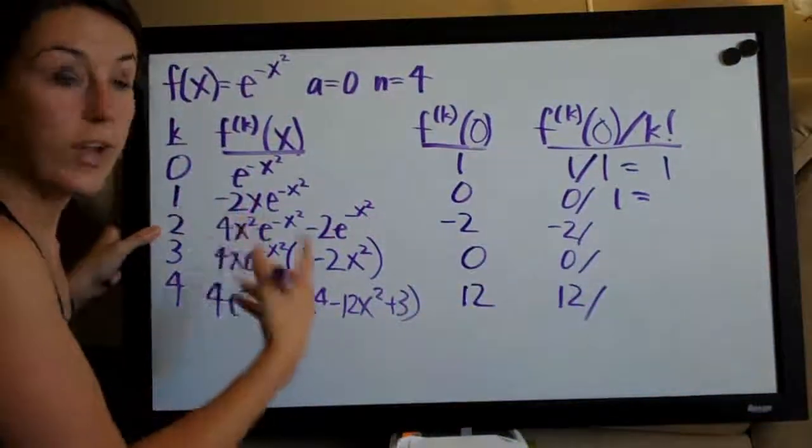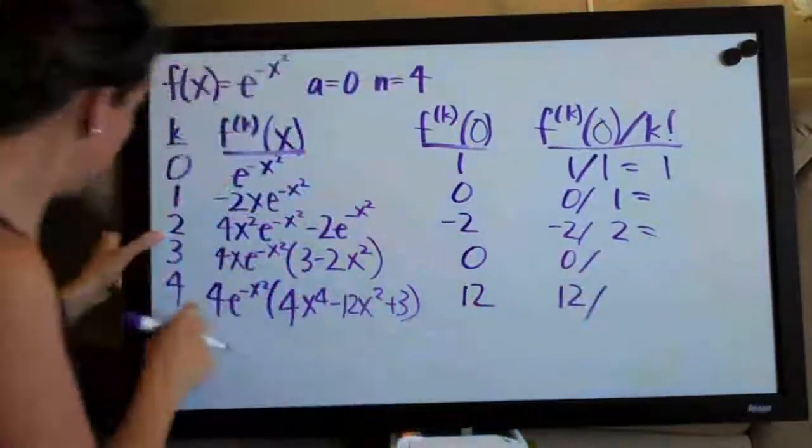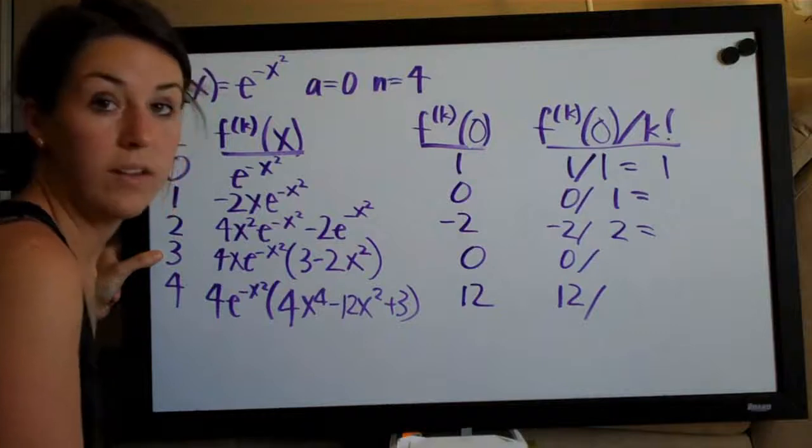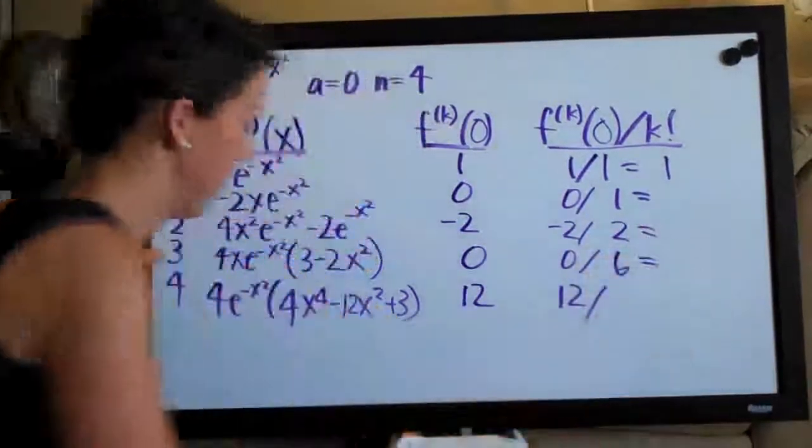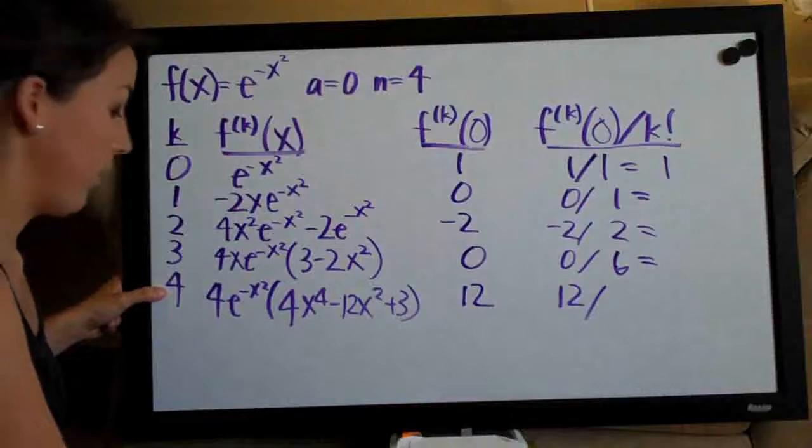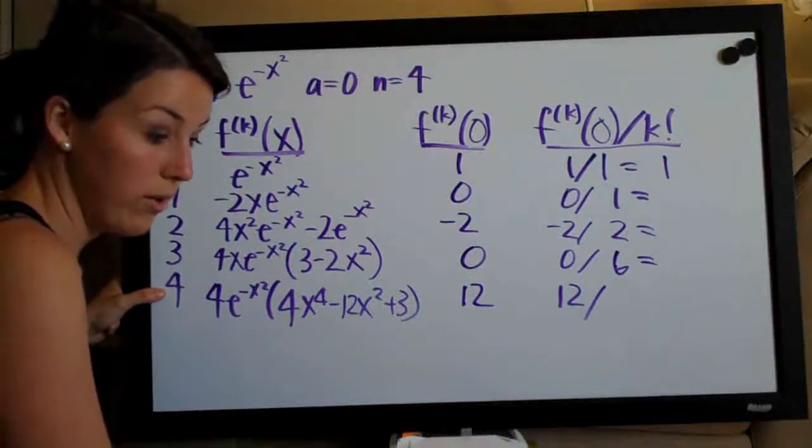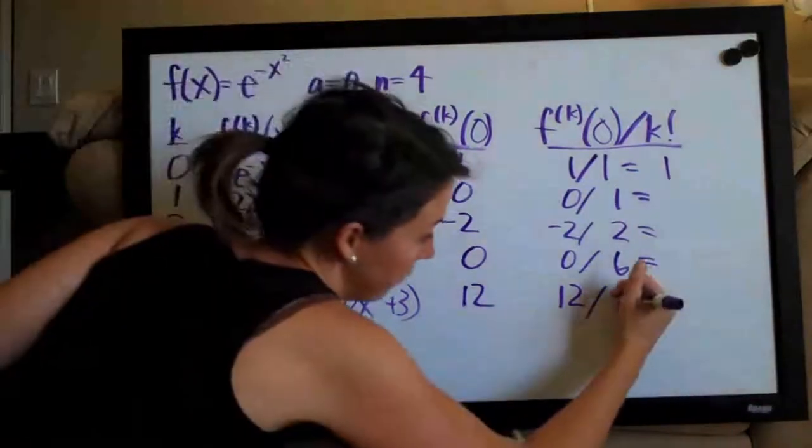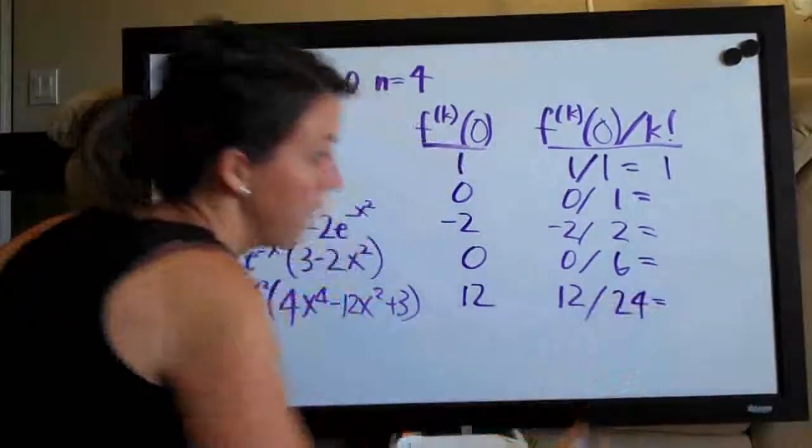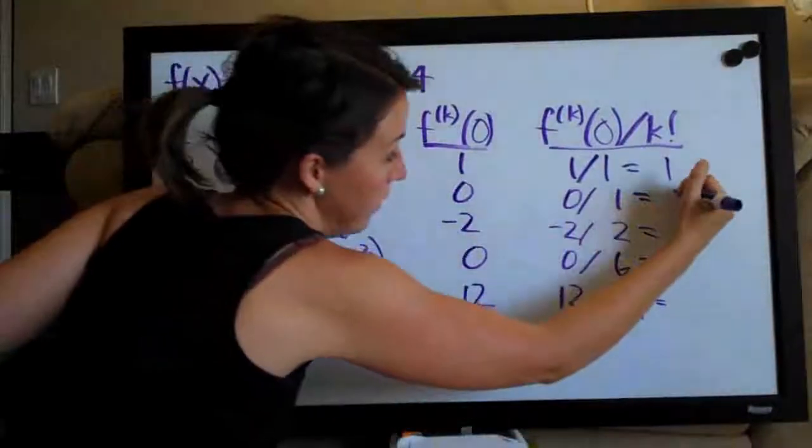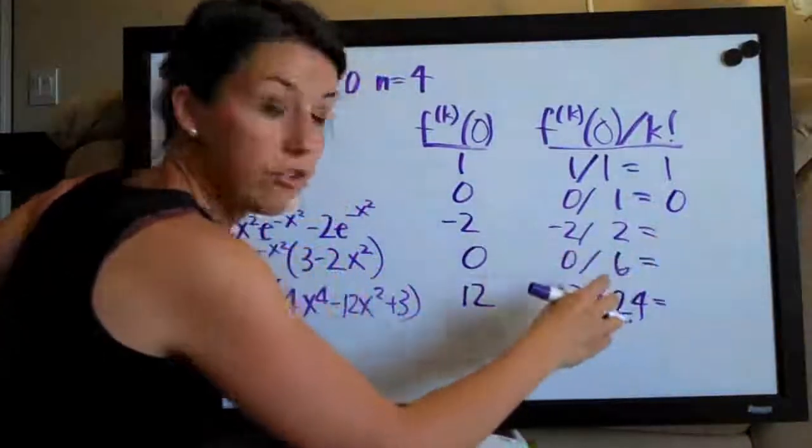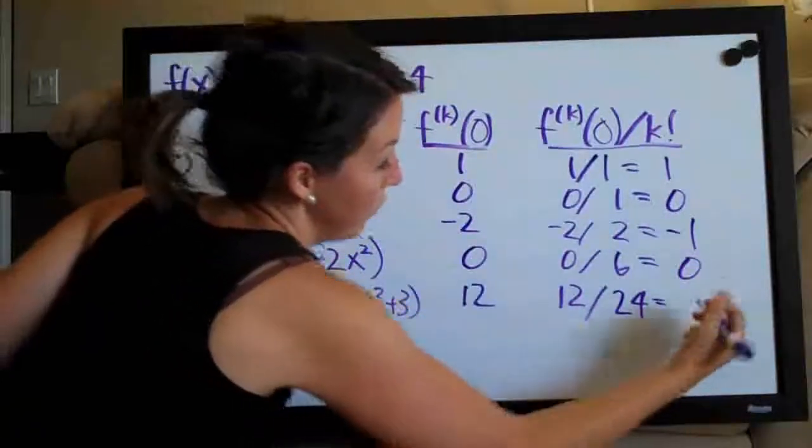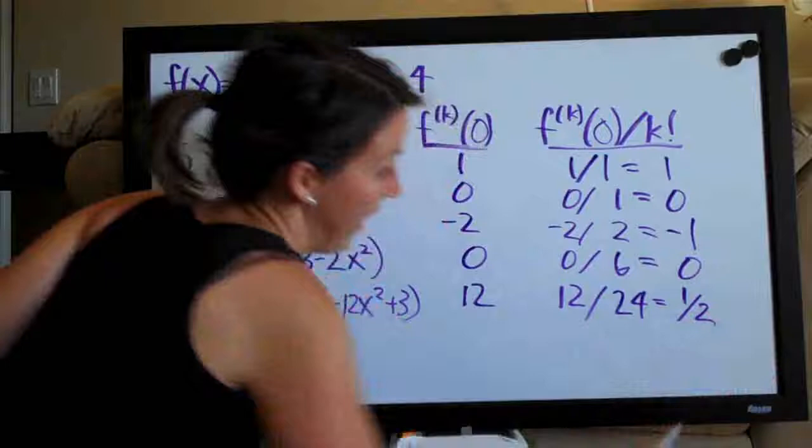Two factorial, two times one is two. Three factorial, three times two is six, times one is six. And then four factorial, four times three is twelve, times two is twenty-four, times one is twenty-four. So, so now we compute this. So, zero over one is just zero. Negative two over two is negative one. Zero over six is zero. And twelve over twenty-four is one half.